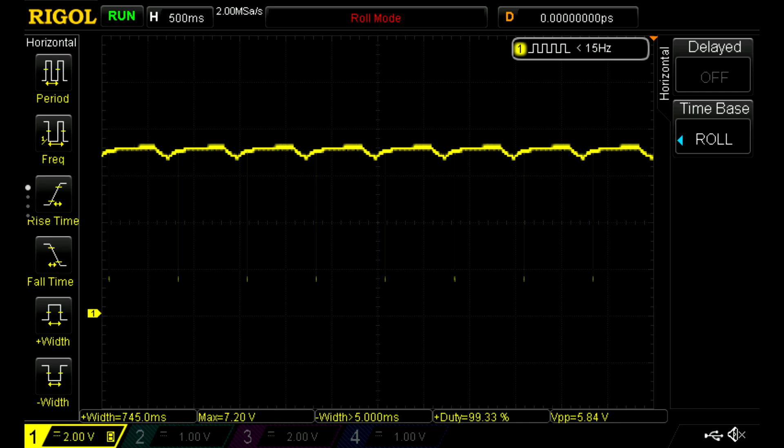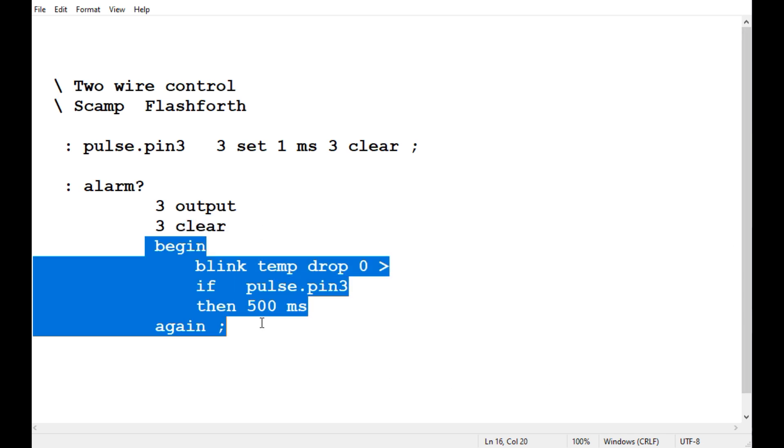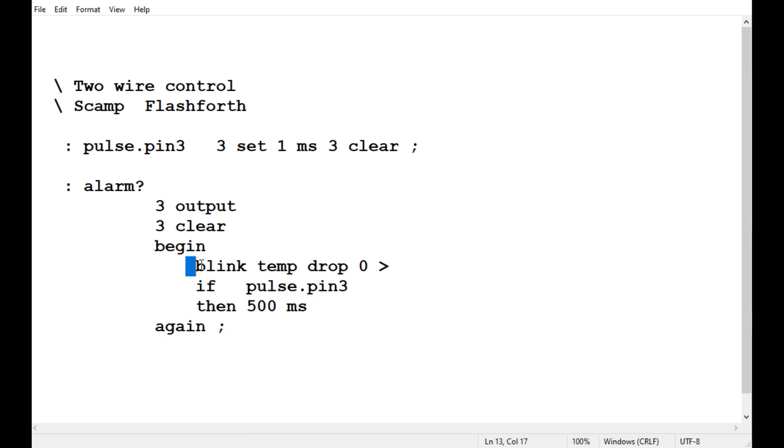So our main word is called alarm. So the first thing we do we make pin 3 an output, that's GPIO pin 3, and we set it to zero, we clear it. Then we go into a begin-again loop. It's a continuous loop, it's always running and it runs every 500 milliseconds or half a second. So the first thing we do we blink the LED on the SCAMP board that indicates that we're taking a temperature measurement.